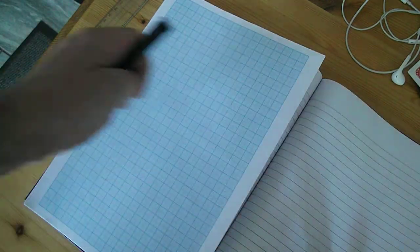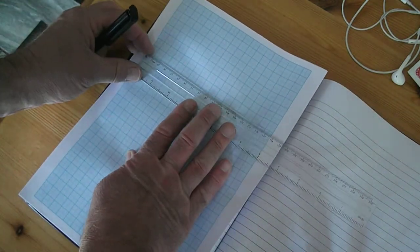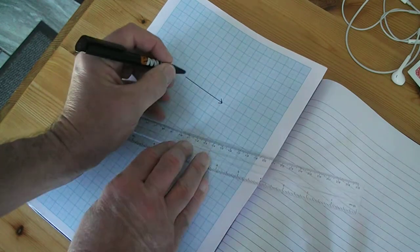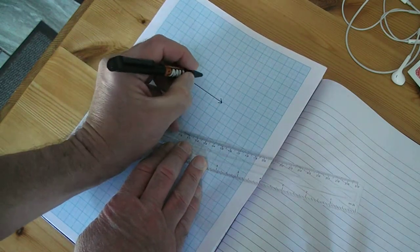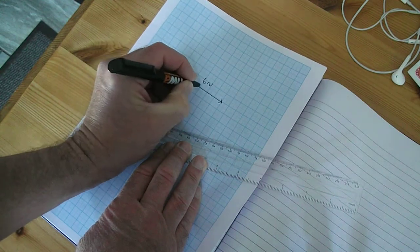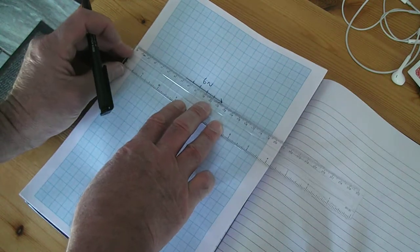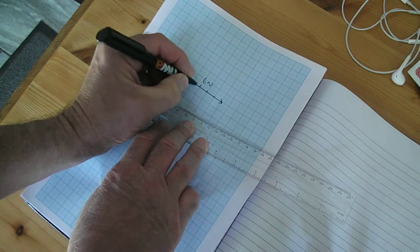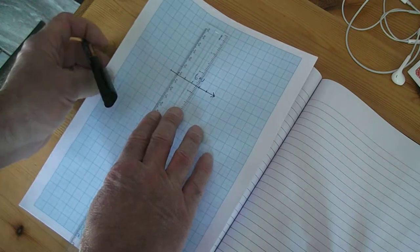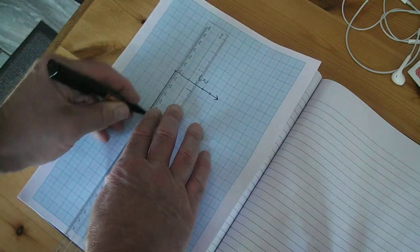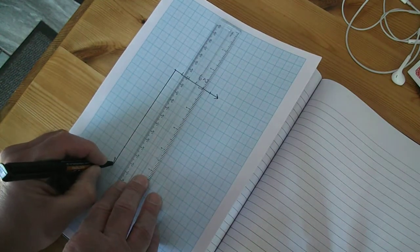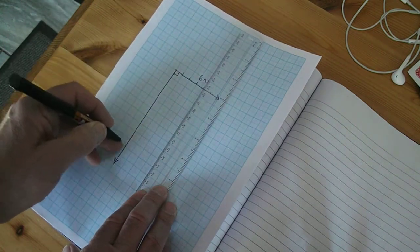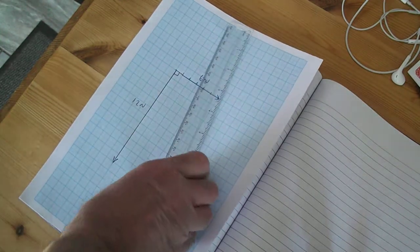Now if I use proper scaling on a piece of graph paper, I could say one centimeter is one Newton. So that's six Newtons - one, two, three, four, five, six Newtons. If I have another force down here at 90 degrees - one, two, three, four, five, six, seven, eight, nine, ten, eleven, twelve Newtons.